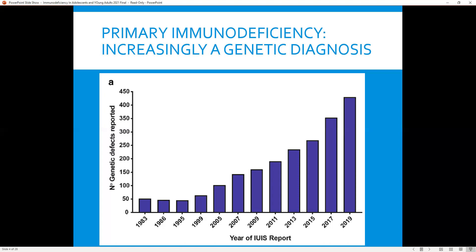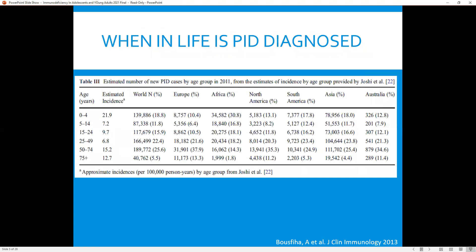When do we really see immunodeficiency diagnosed most commonly — when in life do we find it? While it's important to realize this data is almost 10 years old and prior to the onset of newborn screening, it is still notable that a sizable proportion of primary immunodeficiency patients are diagnosed in adulthood — 69% of all new worldwide primary immunodeficiency cases are diagnosed in people who are more than 15 years of age, and 50% over 25 years of age.